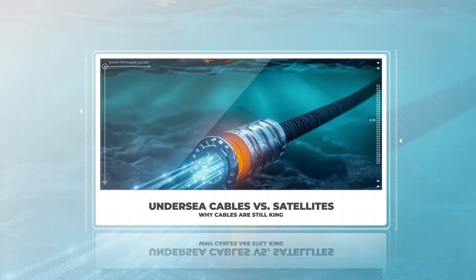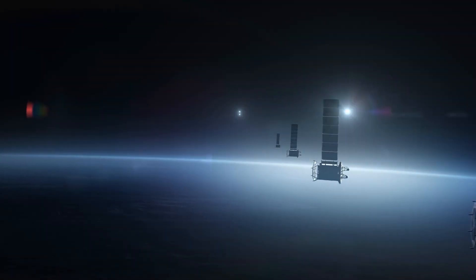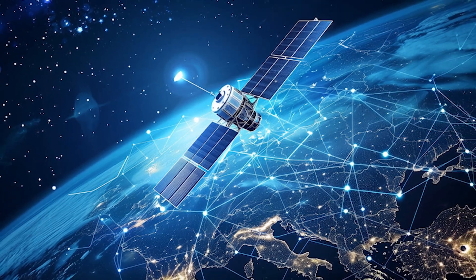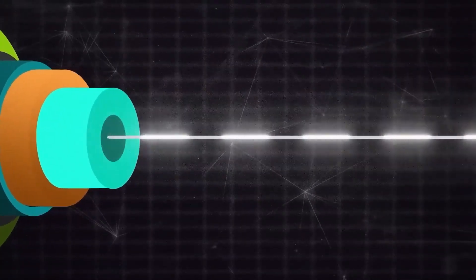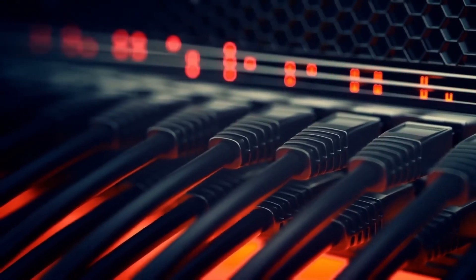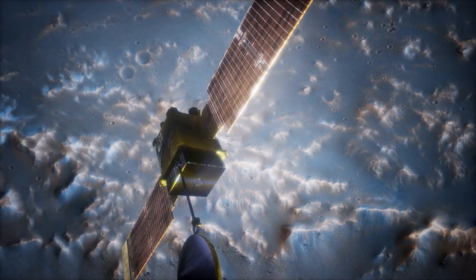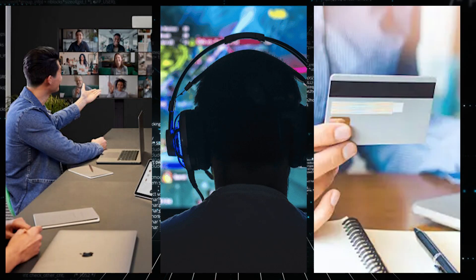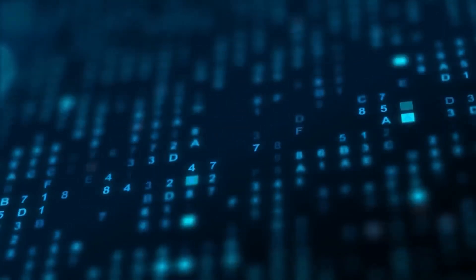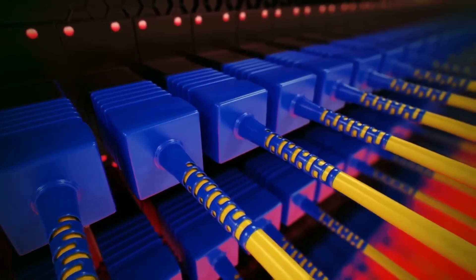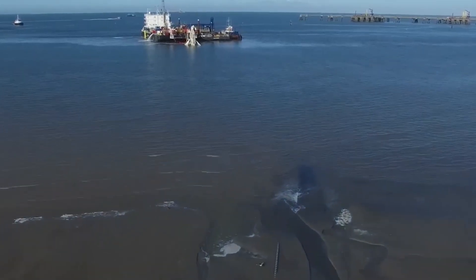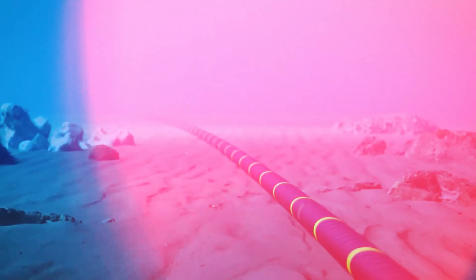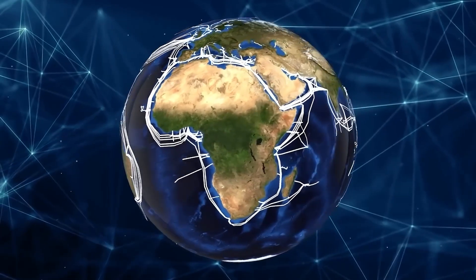Undersea cables versus satellites: why cables are still king. With the rapid advancements in satellite technology, one might wonder why the world still relies on undersea cables to transmit internet data. While satellites offer impressive coverage, they cannot compete with the speed and capacity of fiber optic cables. One of the biggest limitations of satellite-based internet is latency — signals sent by a satellite must travel to space and back, resulting in noticeable delays in communication. For applications like video conferencing, online gaming, or financial transactions, this delay is unacceptable. Fiber optic cables, on the other hand, offer significantly lower latency, allowing for near-instantaneous communication. Furthermore, the bandwidth capacity of undersea cables far exceeds that of satellite systems. As global data usage continues to skyrocket, fiber optic cables are the only technology capable of meeting the ever-increasing demand for data transmission.